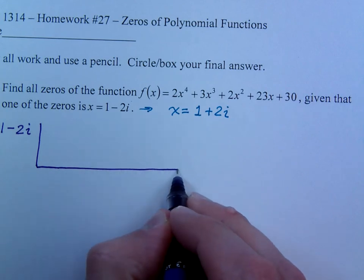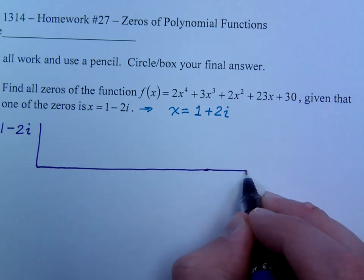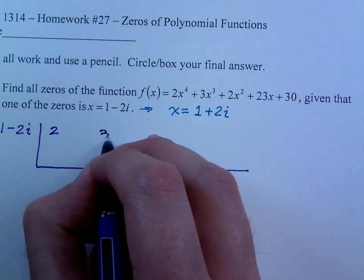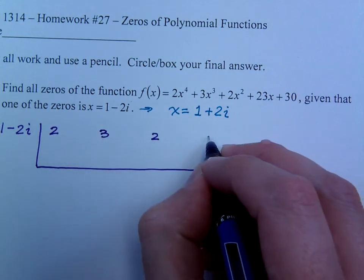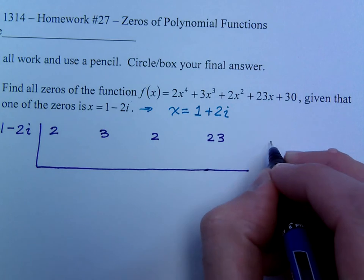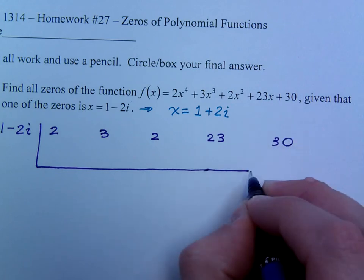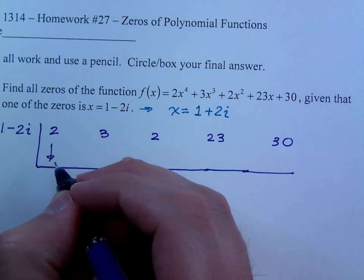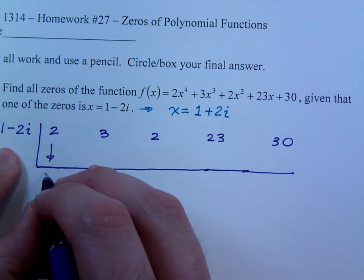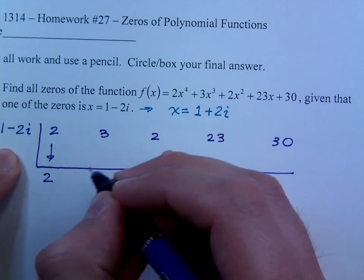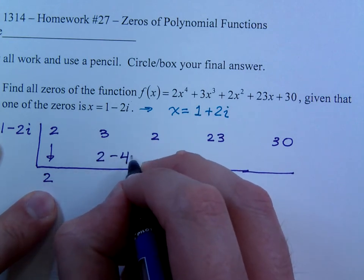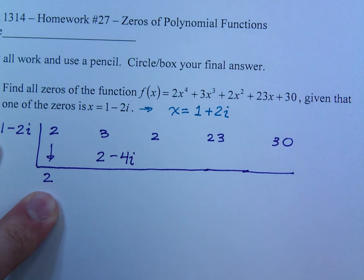When you are using a complex number for a k value, you want to give yourself plenty of space here. So here's 2, 3, 2, 23, and 30. So bring down the 2, and this gives you 2, multiply here, and that's 2 minus 4i. I know you guys are watching to make sure I don't make a mistake. I appreciate that.